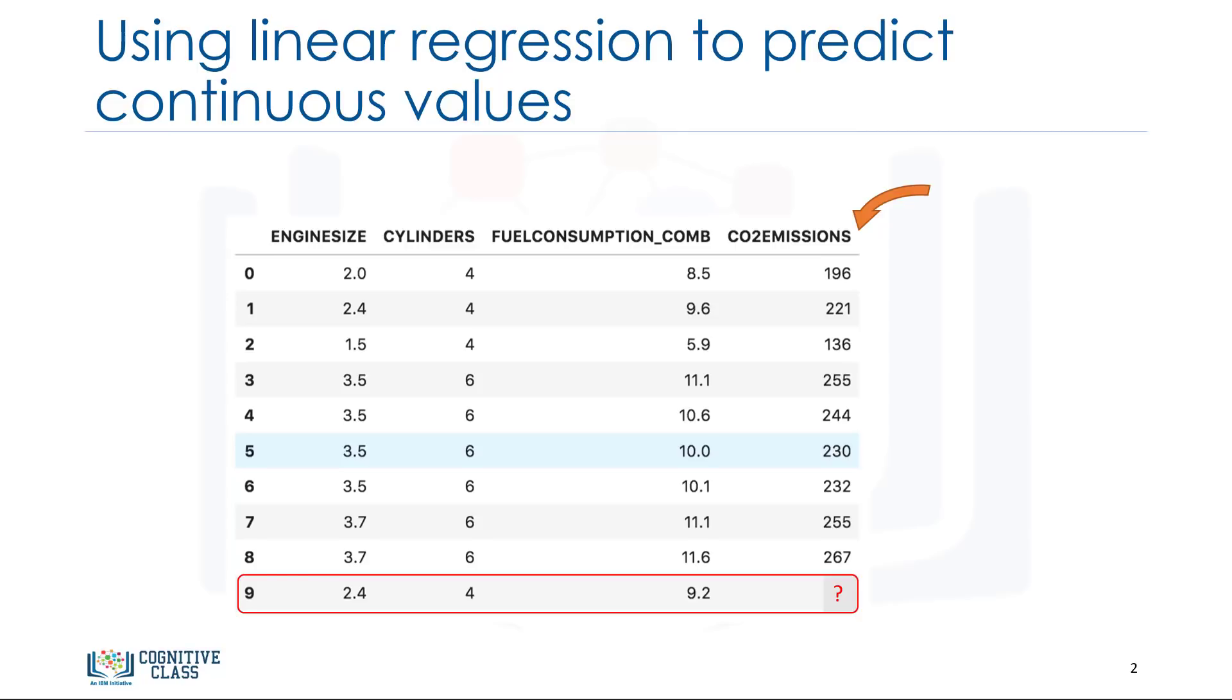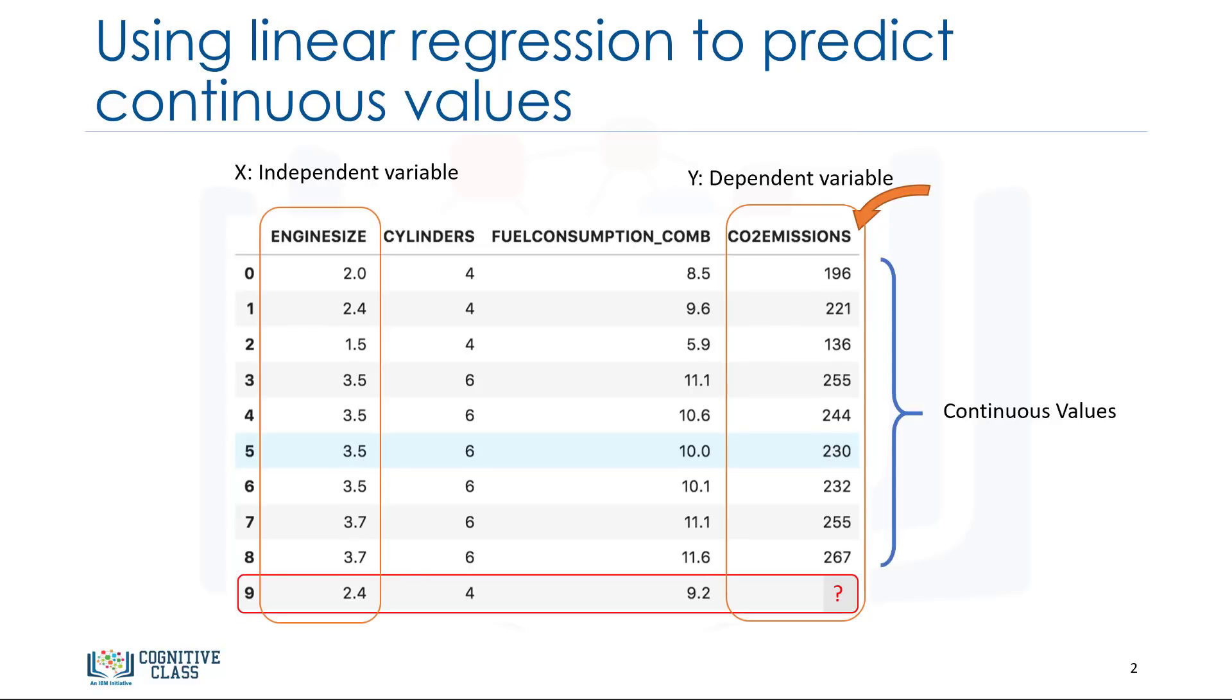We can use linear regression to predict a continuous value such as CO2 emission by using other variables. Linear regression is the approximation of a linear model used to describe the relationship between two or more variables. In simple linear regression, there are two variables, a dependent variable and an independent variable.